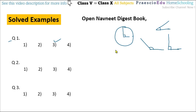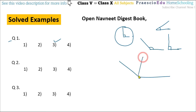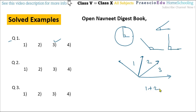Question number 2: how many angles are formed in the given figure? The figure has sections 1, 2, and 3. The addition of these — 1 plus 2 plus 3 — gives 6, and 6 is given in option number 2.